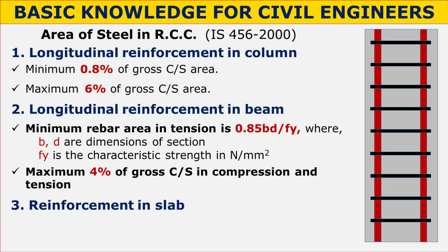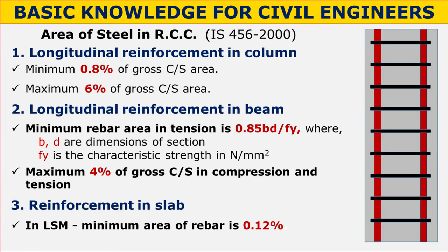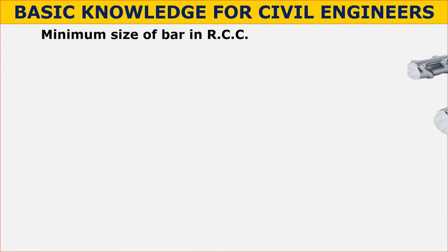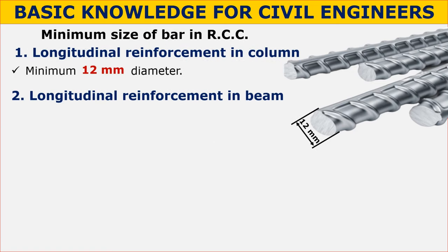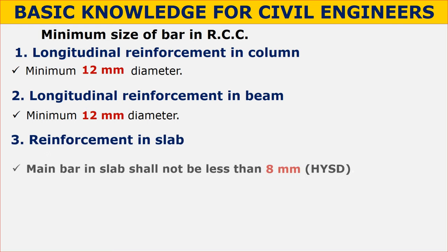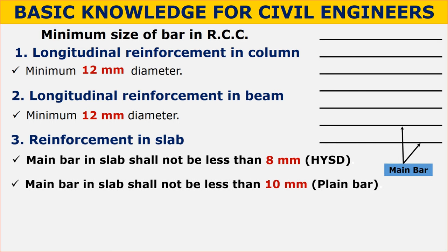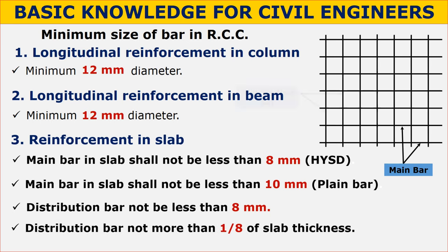For reinforcement in slabs using LSM (Limit State Method), the minimum area of rebar is 0.12 percent, and 0.15 percent in WSM (Working Stress Method). The minimum size of longitudinal reinforcement bar in a column and beam shall be 12 mm. Main bars in slab shall not be less than 8 mm for HYSD (High Yield Strength Deformed) bars or 10 mm for plain bars. Distribution bars shall not be less than 8 mm or more than 1/8 of the slab thickness.